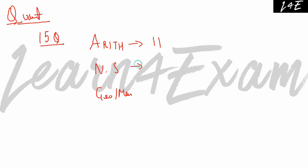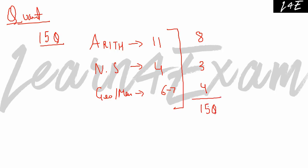I have covered these topics in previous CAT videos — the split is 11, 4, and 6-7 questions across these areas. In the 11-question Arithmetic segment, there are about 8 questions that are always easy. For Number System, take about 3 questions. For Geometry and Mensuration, aim for 4 questions — though that section is tough. This gives you a total of 15 questions.